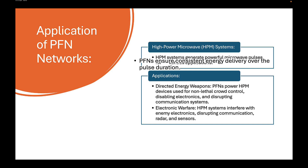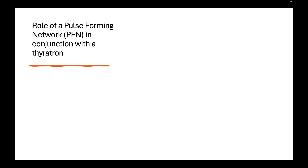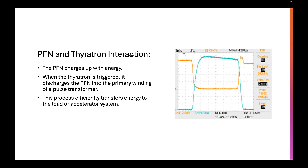The significance of PFNs is that they ensure consistent energy delivery over the pulse duration, allow precise control of pulse shape and energy, and their compact design makes them suitable for various applications. Regarding the role of the pulse-forming network in conjunction with the thyratron: a thyratron is a high-current switch used in pulse power systems. When triggered, it rapidly discharges the energy stored in the PFN into the primary winding of the pulse transformer, efficiently transferring energy to the load or accelerating system.